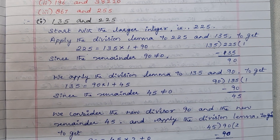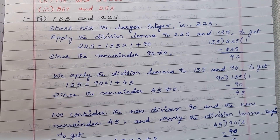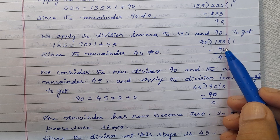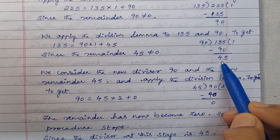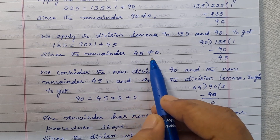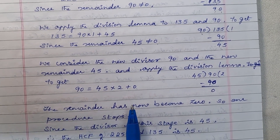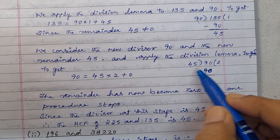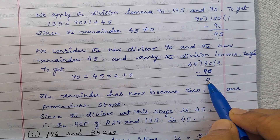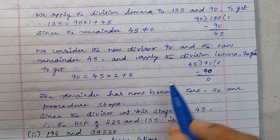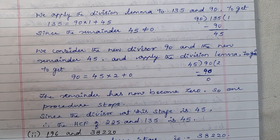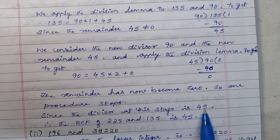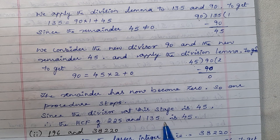We apply the division lemma to 135 and 90. So 135 equals 90 into 1 plus 45, remainder is 45. Since remainder 45 is not equal to 0, we consider new divisor 90 and new remainder 45, and apply the division lemma to get 90 divided by 45 - remainder is 0. The remainder has now become 0, so our procedure stops. Since the divisor at this stage is 45, therefore the HCF of 225 and 135 is 45.